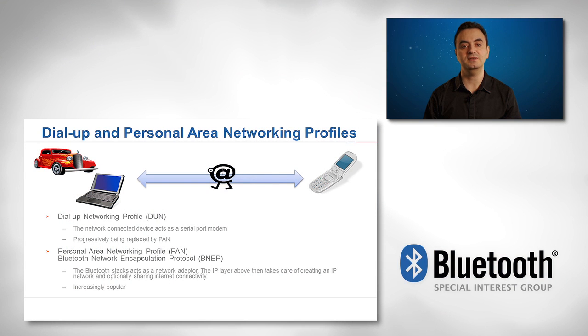Dial-up networking profile, known as DUN, enables one device, like a computer, to use another device, like a mobile phone, as a serial modem. Typically, the modem is used to access the Internet, and Bluetooth in this case emulates a serial port connection.